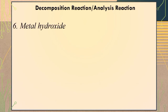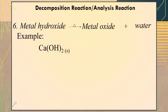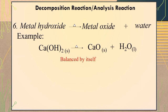The sixth type of decomposition reaction is the decomposition of metal hydroxide. When heat energy is applied to metal hydroxide, it will dissociate into metal oxide plus water. For example, when heat energy is applied to calcium hydroxide, it will dissociate into calcium oxide, which is the metal oxide, plus water. Through inspection, we can say that the equation is balanced by itself. Note that not all equations involving dissociation of metal hydroxide will lead to balancing by itself.